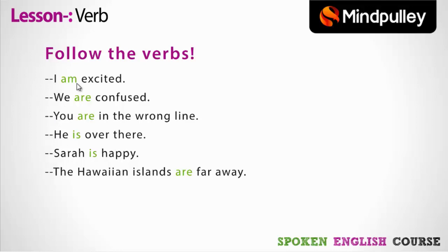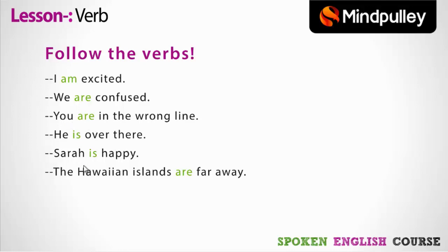When it is I, it becomes 'am'. When it is we, it becomes 'are'. When it is you, it becomes 'are'. When it is he or she, it becomes 'is'. When it is third person plural, it becomes 'are'. So all these — am, are, is — are different forms of the verb 'be'. Be becomes 'am' for I, 'are' for you, and so on. We can say that the form of the verb changes depending upon the subject.